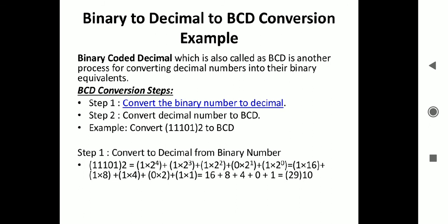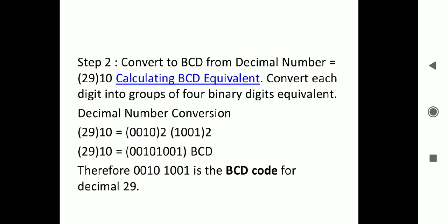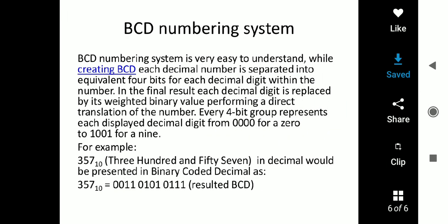If you manually do 4-digit group, 11101, that would be 00001 1101. This is wrong, because it is binary coded decimal. You convert binary number to decimal first, then convert each decimal digit to 4-digit format. This is very easy. This is BCD number system.